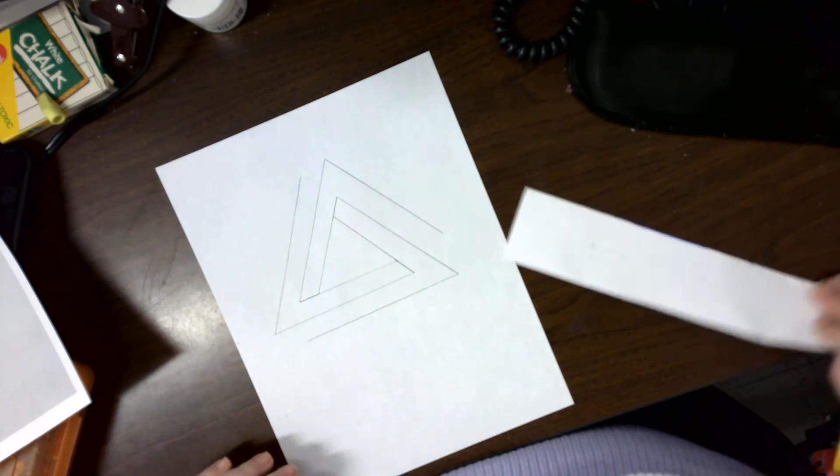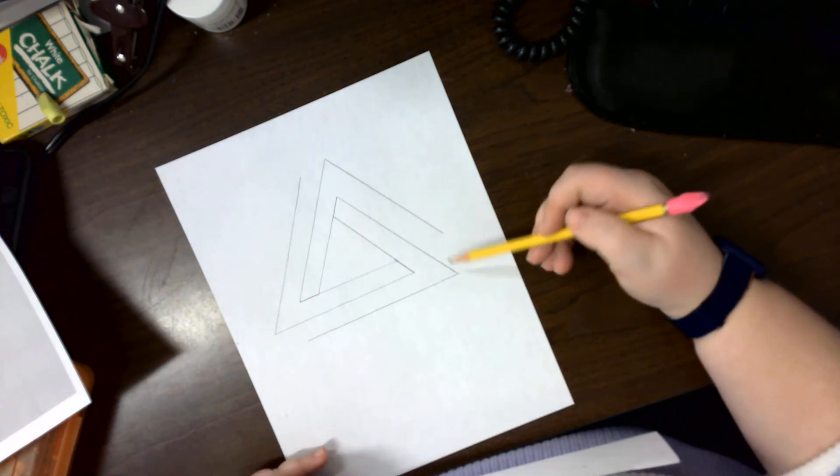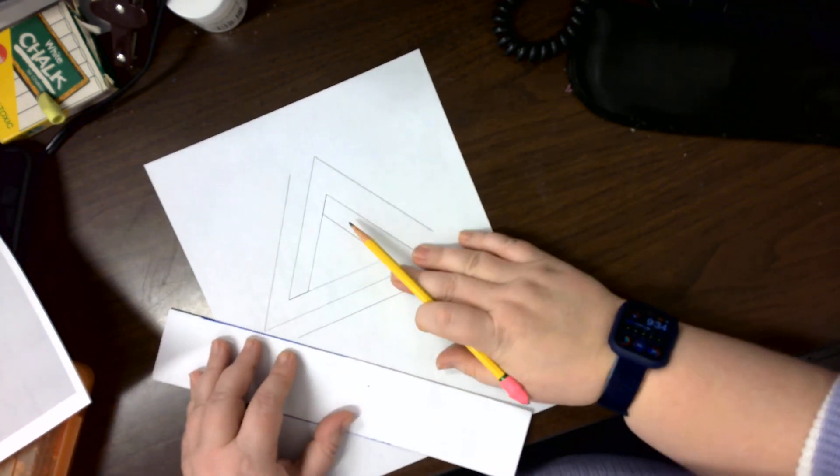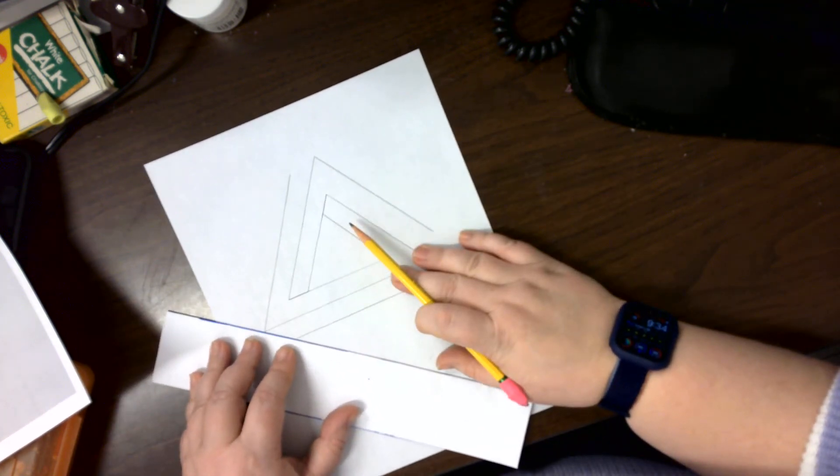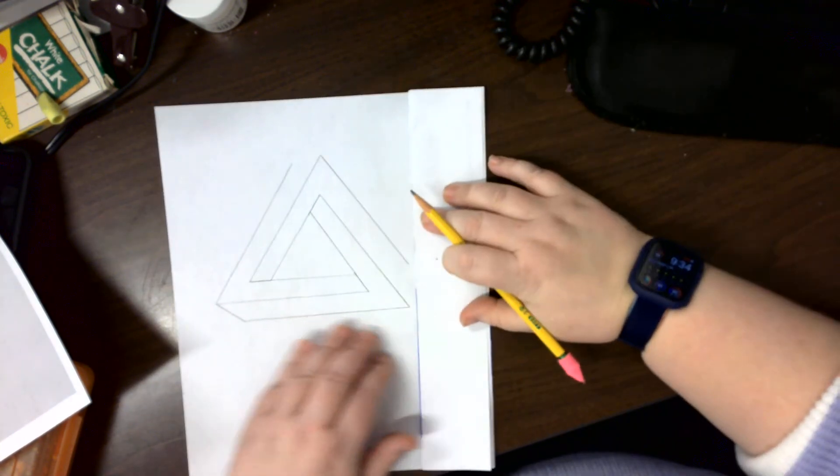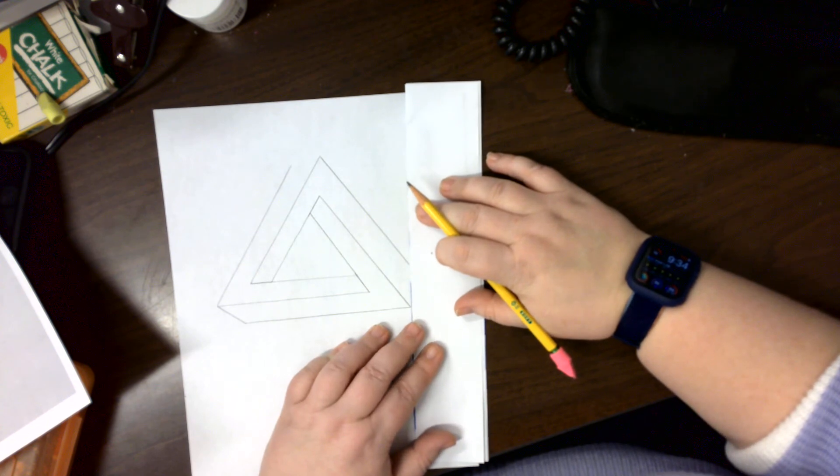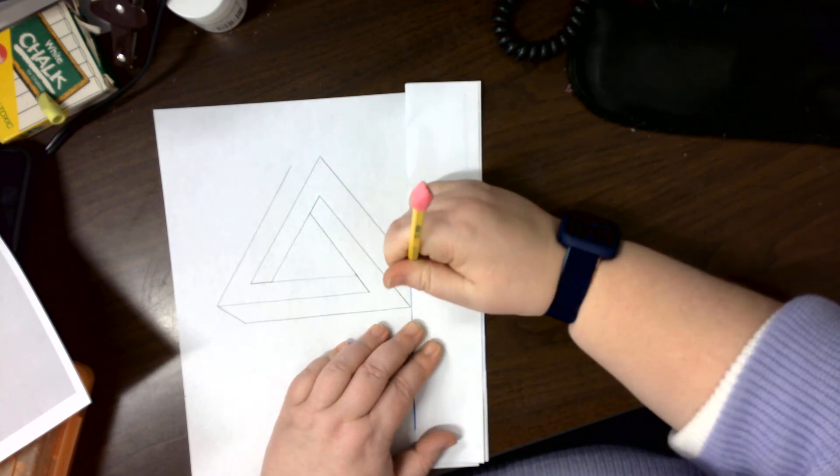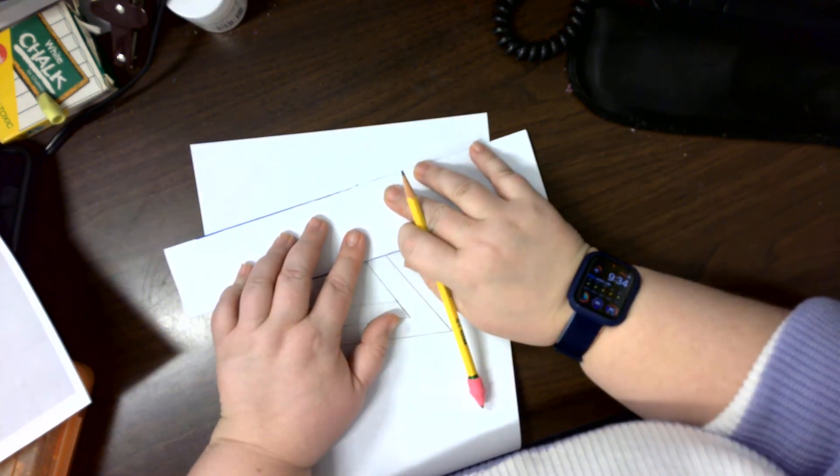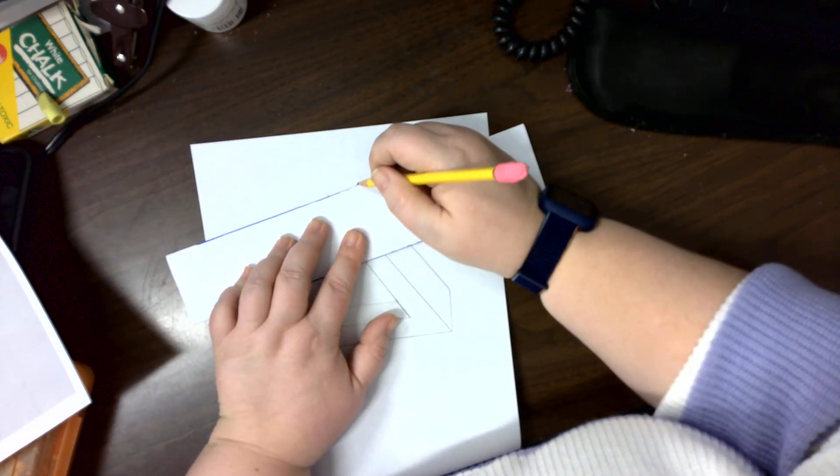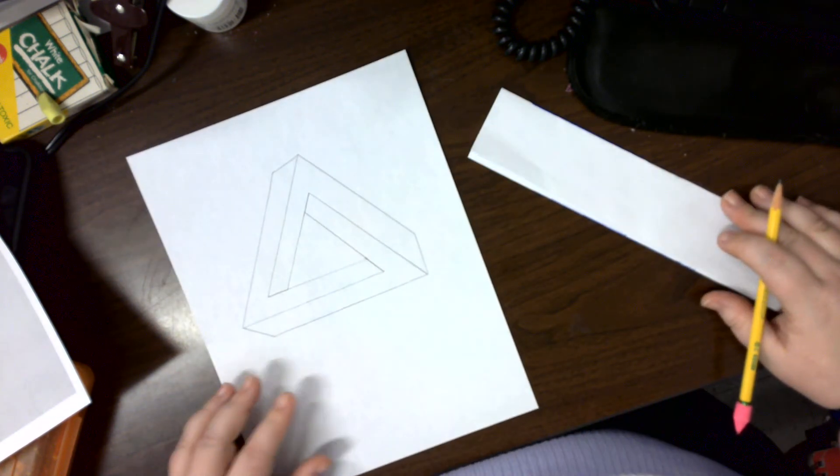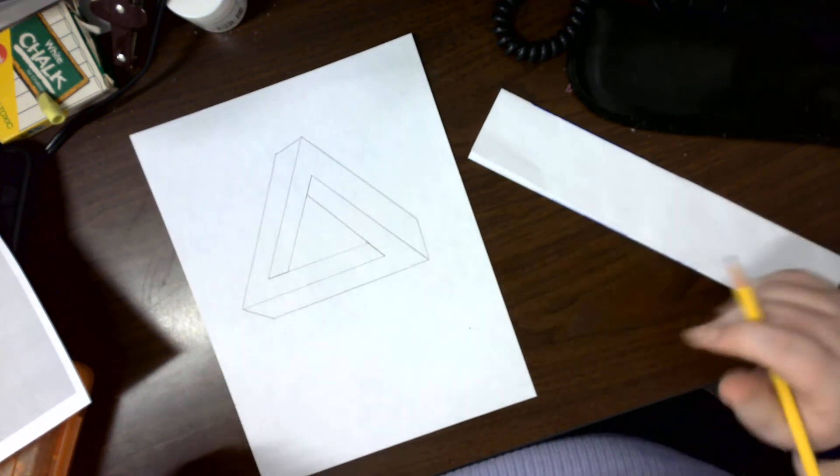The final part is to connect these lines. Draw a line connecting that one, that one, and this one. So now we have our impossible triangle.